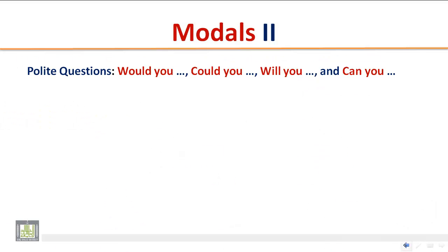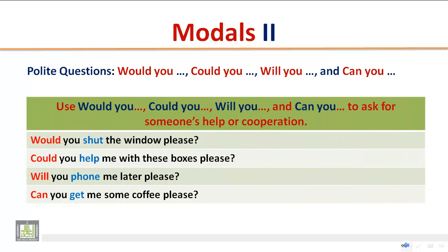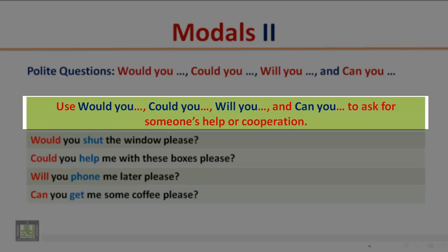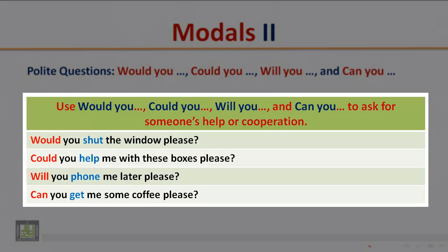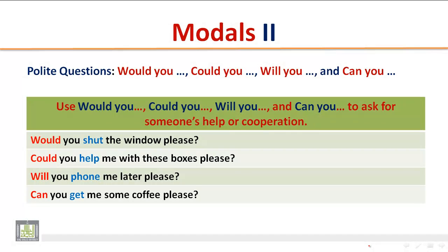Use 'would you,' 'could you,' 'will you,' and 'can you' to ask for someone's help or cooperation. Examples: Would you shut the window, please? Could you help me with these boxes, please? Will you call me later, please? Can you get me some coffee, please? Notice that the modal auxiliary in these examples is used to ask for help or cooperation.